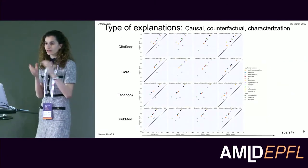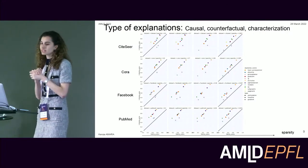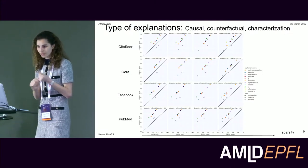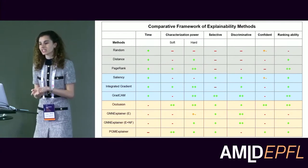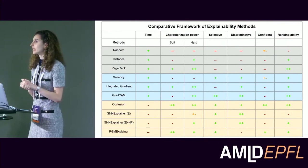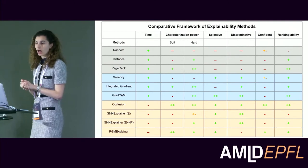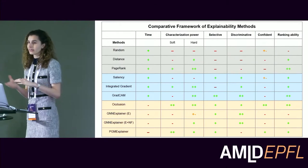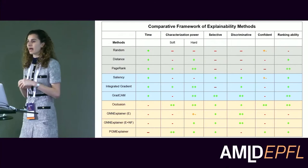I focused on node classification and compared input-level explainability methods. Results for real-world datasets are very informative and can be summarized in a comparative table where each method is evaluated on multiple criteria, such as computation time for generating a mask, its characterization power, and other properties like being selective, discriminative, confident, and ranking ability.